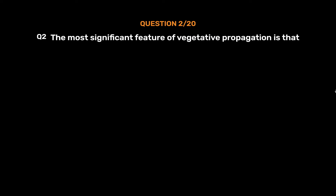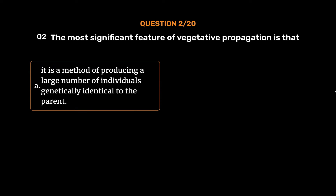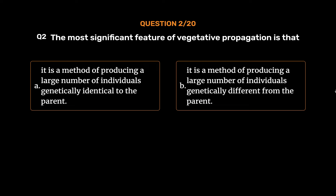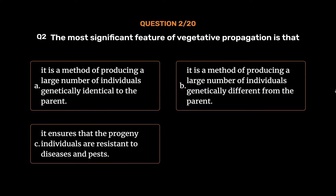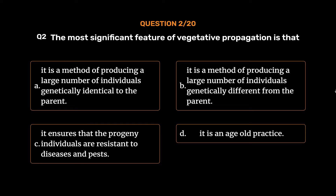Question No. 2: The most significant feature of vegetative propagation is that. Option A: It is a method of producing a large number of individuals genetically identical to the parent. Option B: It is a method of producing a large number of individuals genetically different from the parent. Option C: It ensures that the progeny individuals are resistant to diseases and pests. Option D: It is an age-old practice. The correct answer is Option A.